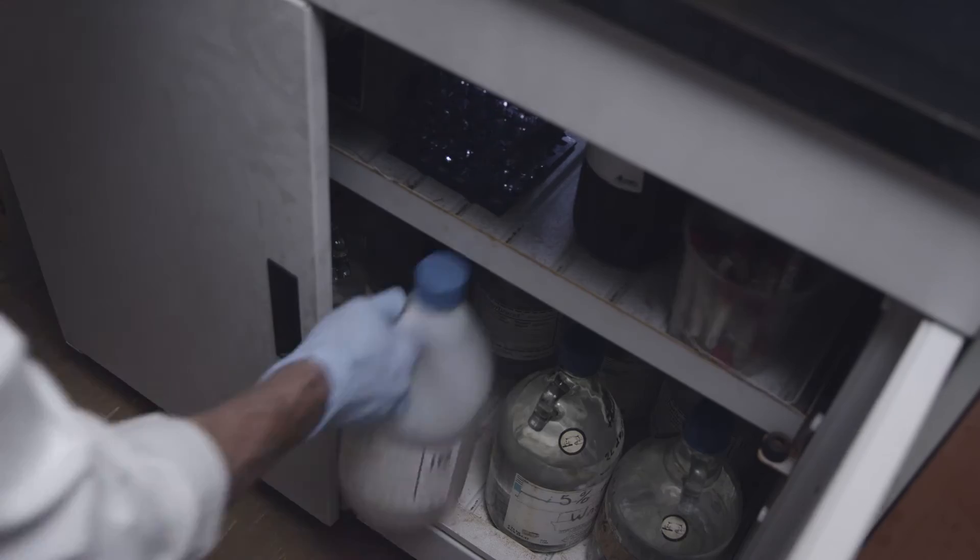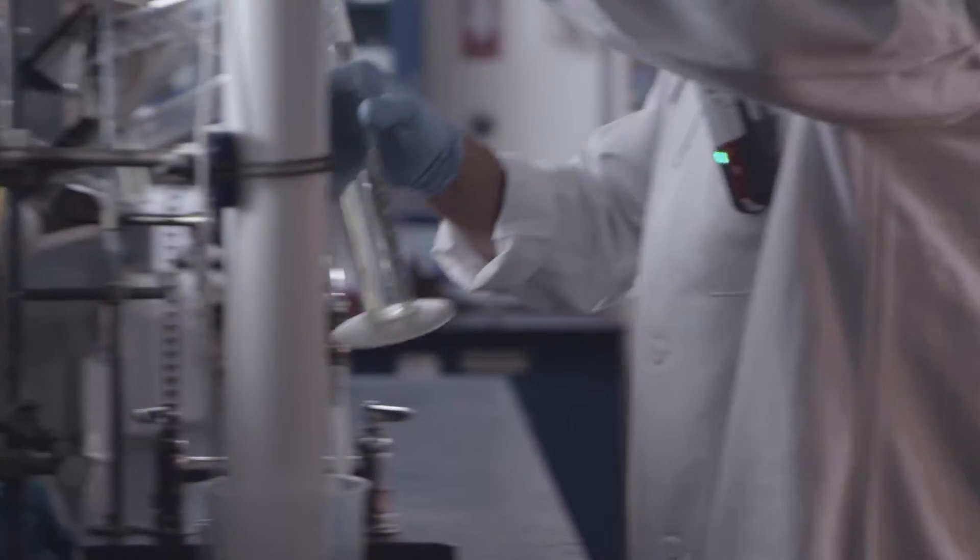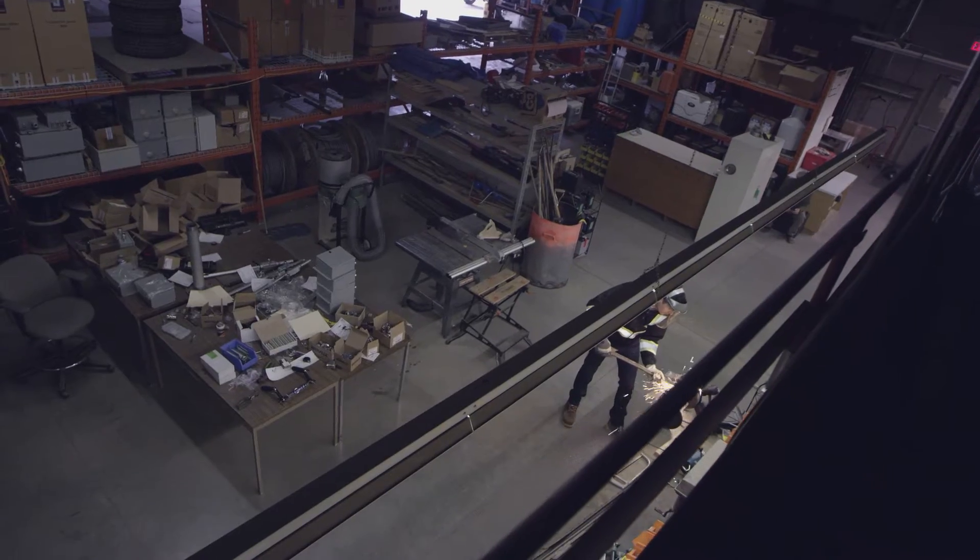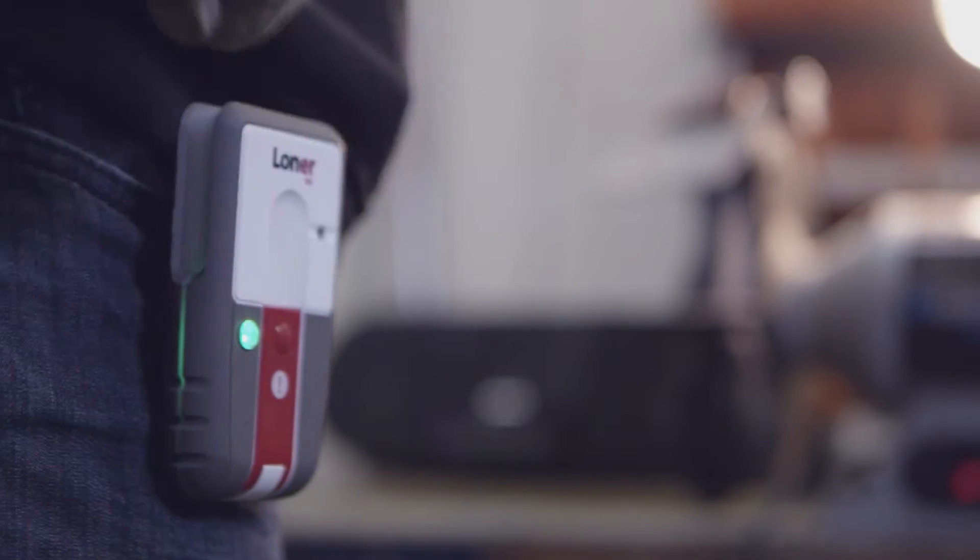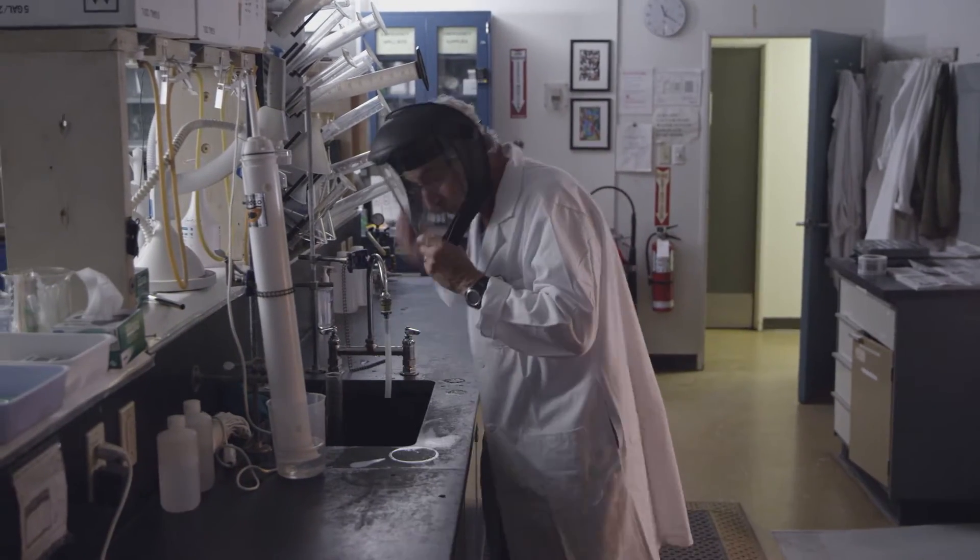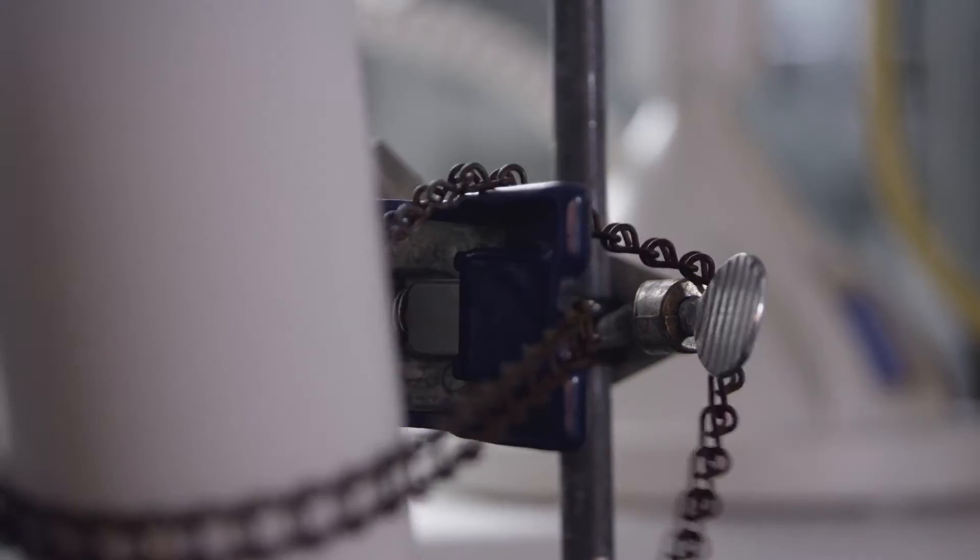Loaner M6 can even tell you if your employee hasn't checked in when prompted. False alerts are minimized with the press of a button, while real alerts are communicated to monitoring personnel in real time.